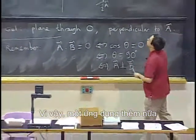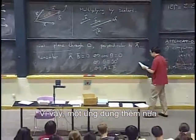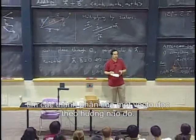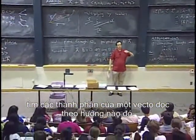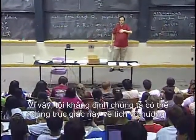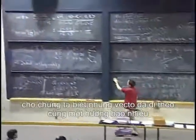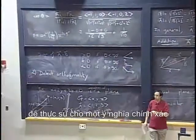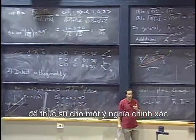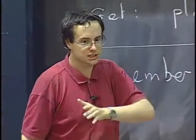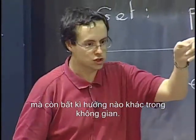One additional application, I think we will see that actually tomorrow, is to find the components of a vector along a certain direction. I claim we can use this intuition I gave about dot product telling us how much two vectors go in the same direction to actually give a precise meaning to the notion of component of a vector, not just along the x, y or z axes, but along any direction in space.